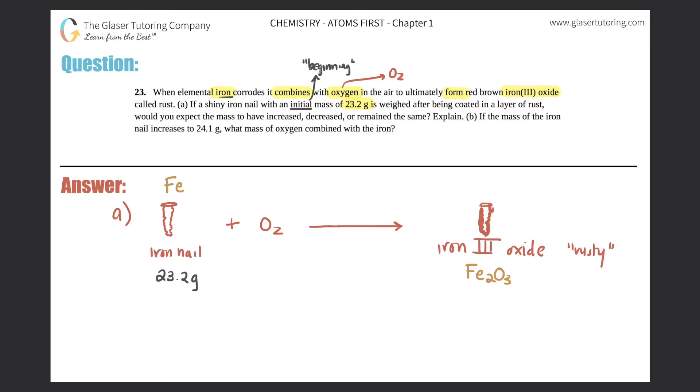Now they're saying if this was an initial mass of 23.2 grams, once it got coated in the layer of rust, would the mass increase, decrease, or remain the same? Now this goes to the law of conservation of matter or mass. It's a law, so it's pretty important.